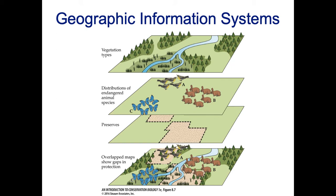GIS is a really important skill for many fields. Mining, oil, and gas development use GIS extensively to identify where resources are. Cities use GIS to map features and do city planning. It's not just a tool for ecology and conservation biology — it's used broadly for mapping. In conservation, we use it in gap analysis to assess whether protected areas are placed where we need them.